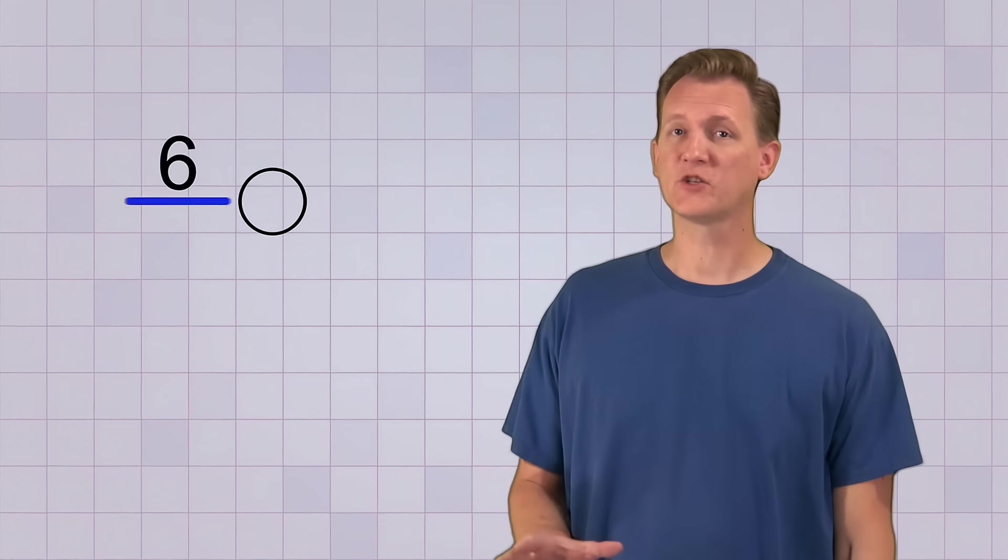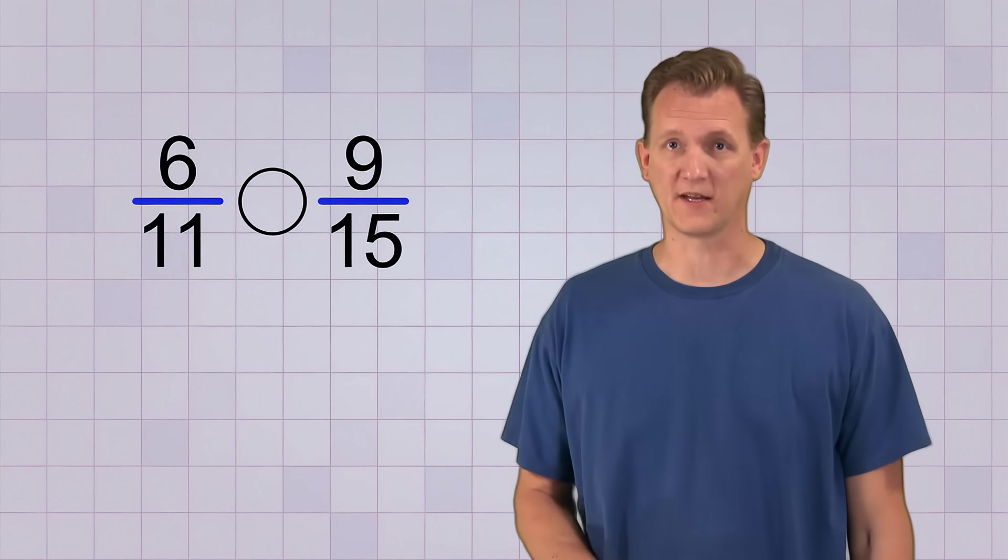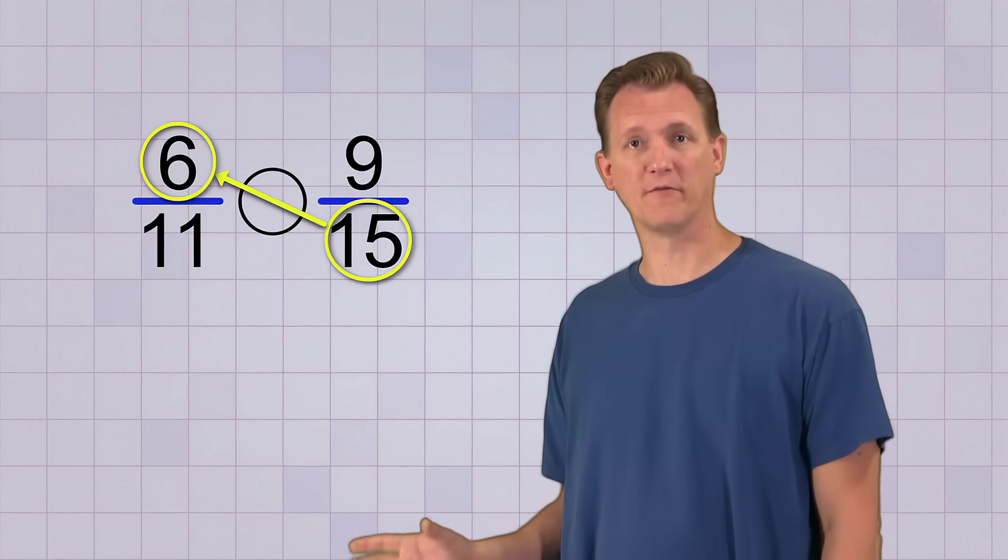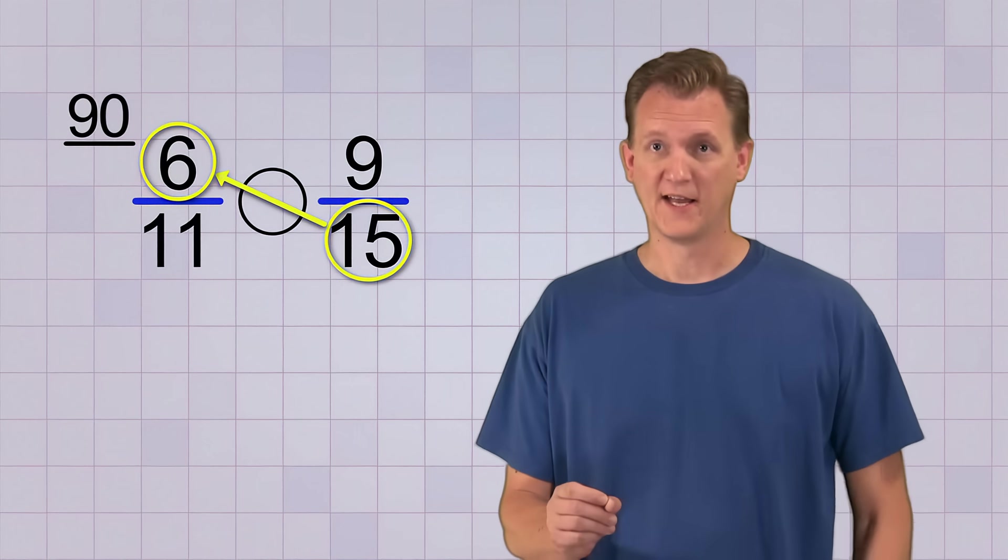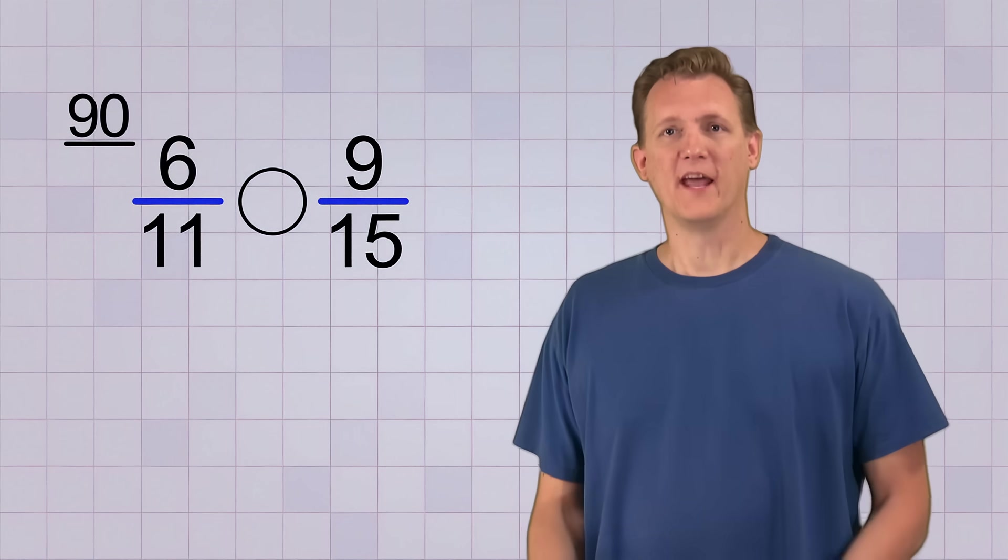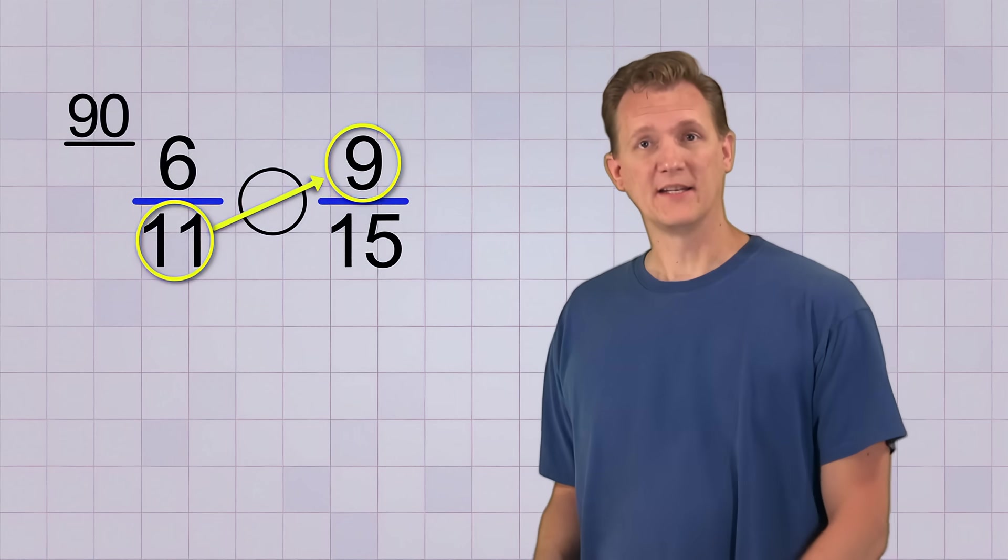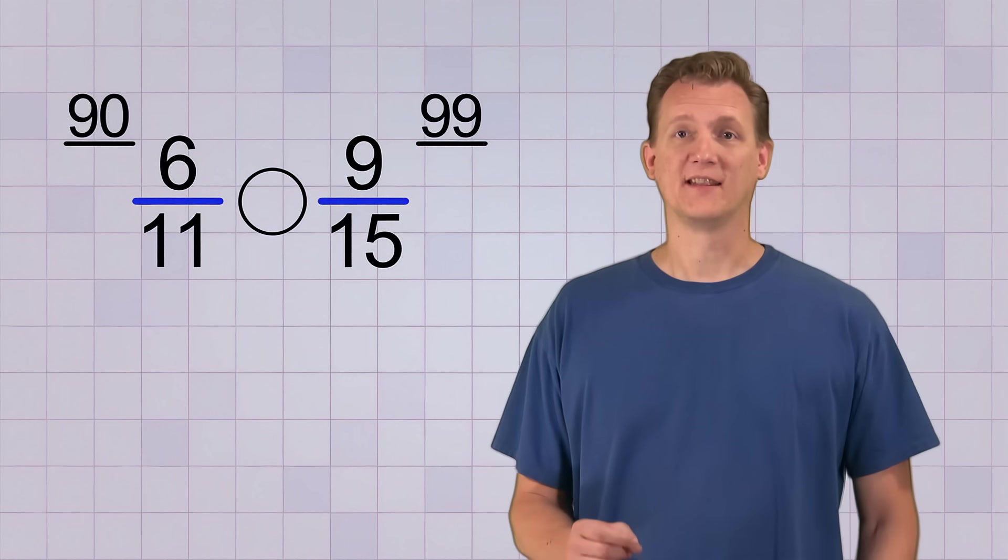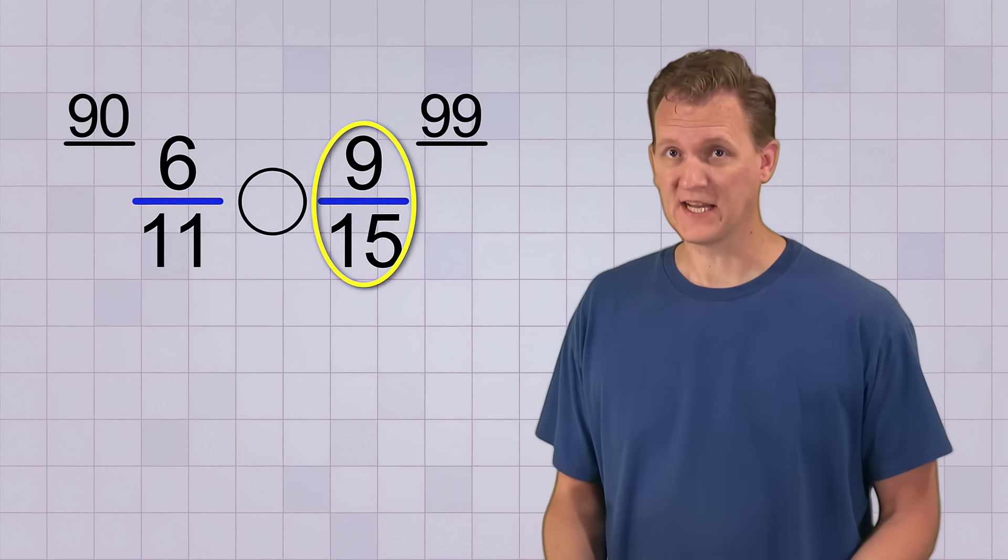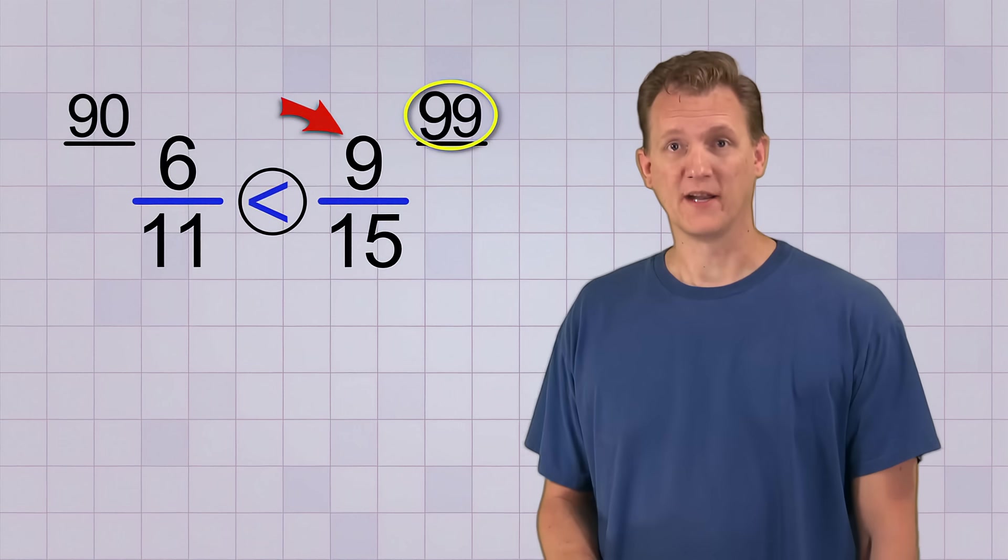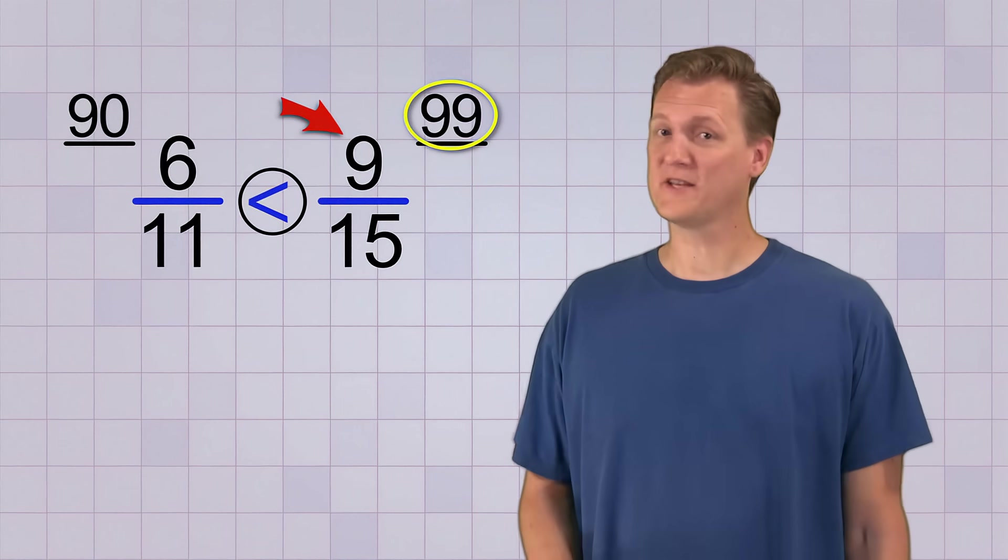Let's do one more comparison by cross-multiplying. Let's compare 6 over 11 to 9 over 15. First, we'll multiply 15 by 6 to get the new top number of the first side, which is 90. Now you can always use a calculator to do the multiplications if you need to. Next, we multiply 11 by 9 to get the second new top number, which is 99. So that tells us that the second fraction, 9 over 15, is greater than the first fraction, because its new top number, 99, is bigger. Pretty simple, huh?